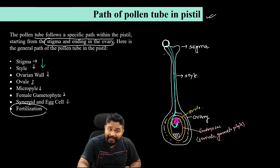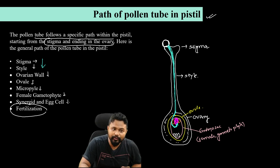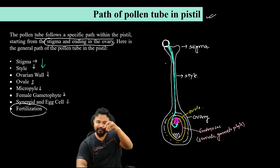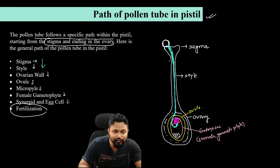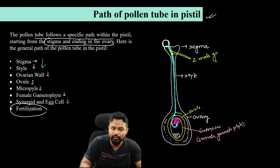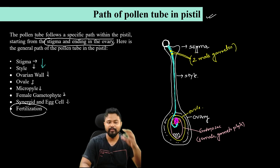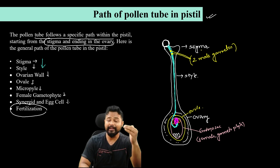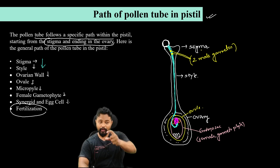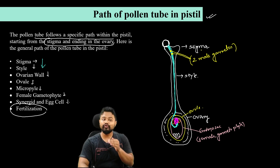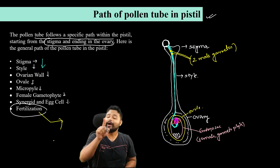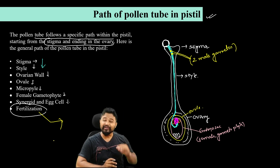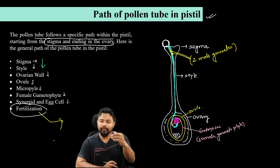The pollen tube carries sperm cells — the male gametes — which move with the pollen tube. Finally, the egg and male gamete fuse, so we can start fertilization. Fertilization here is not a single fertilization; it is called double fertilization.